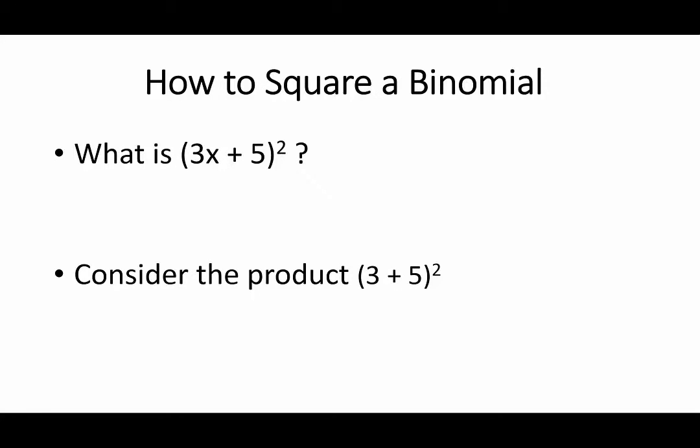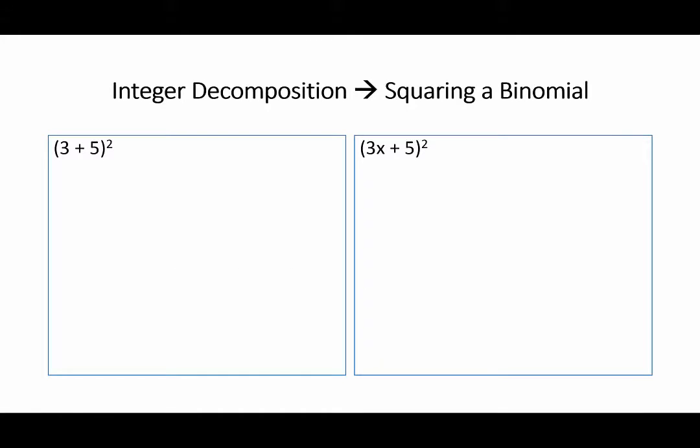Let us consider first the product 3 plus 5 squared. Yes, this is the same technique we applied to multiply any two binomials, but let us see it again in this context. This is a decomposition of 8, and that's 8 squared, which is just 64.